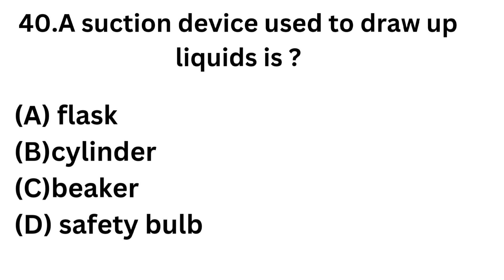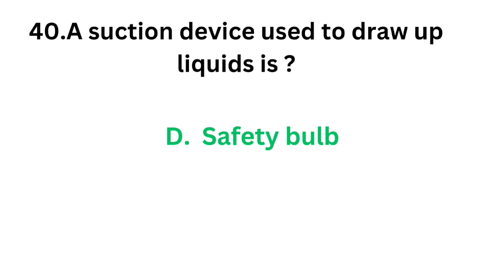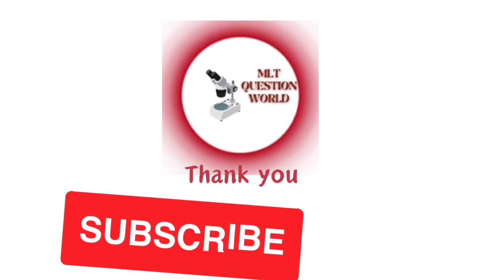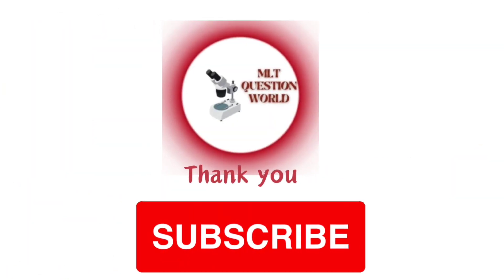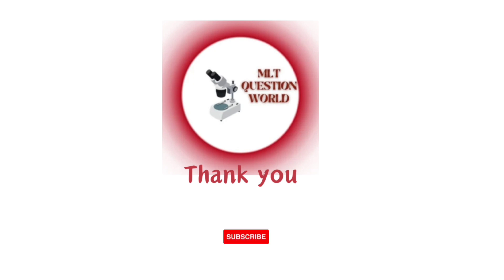Question number 40: A suction device used to draw up liquids — Option A: Flask. Option B: Cylinder. Option C: Beaker. Option D: Safety Bulb. The correct answer is Option D, safety bulb. A safety bulb can be attached to pipettes to draw up liquids. So we are winding up for today. You can watch the previous videos from the links in the description box and from the playlist also. Subscribe to the channel. Thank you for watching.